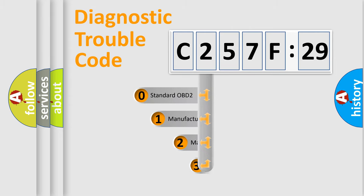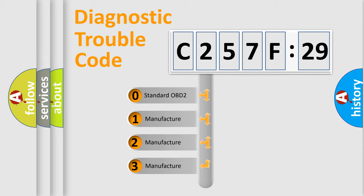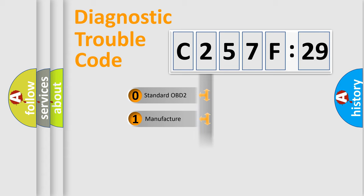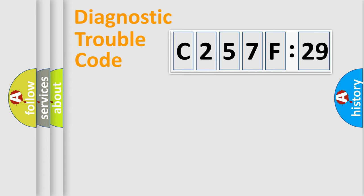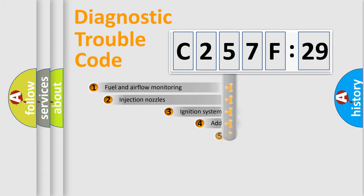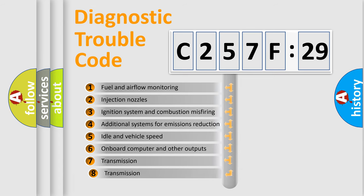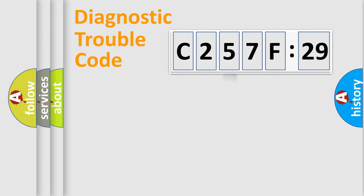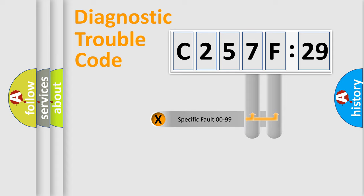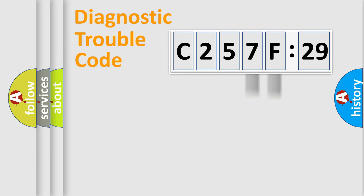This distribution is defined in the first character of the code. If the second character is expressed as zero, it is a standardized error. In the case of numbers 1, 2, or 3, it is a manufacturer-specific error. The third character specifies a subset of errors. This distribution is valid only for the standardized DTC code. Only the last two characters define the specific fault of the group.